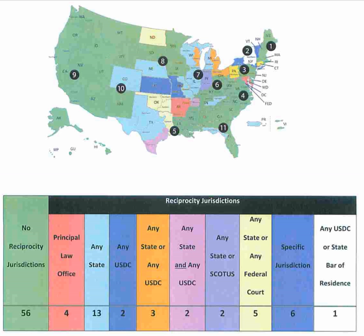There is at least one judicial district for each state, the District of Columbia, and Puerto Rico. District courts in three insular areas—the United States Virgin Islands, Guam, and the Northern Mariana Islands—exercise the same jurisdiction as Article III U.S. district courts. Despite their name, these courts are technically not District Courts of the United States. Judges on these Article IV territorial courts do not enjoy the protections of Article III of the Constitution, and serve terms of 10 years rather than for life. There are 89 districts in the 50 states, with a total of 94 districts including territories.